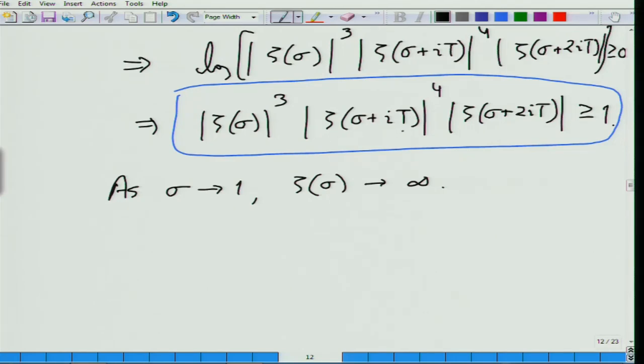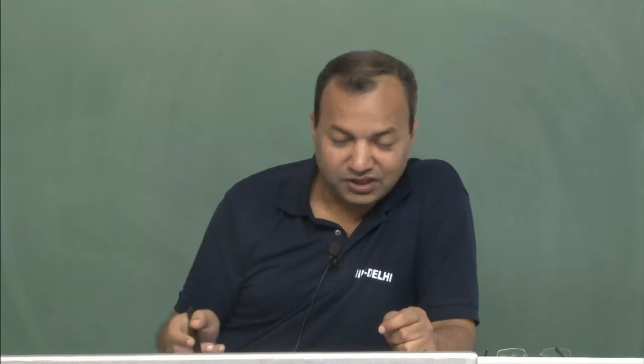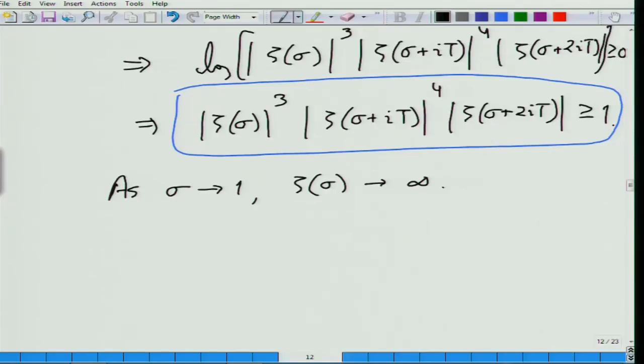Now comes the third character ζ(σ+2it). This may still want to send the product to infinity or keep it above 1, provided it also has a pole of order at least 1. But does it have a pole? No — the zeta function has only one pole, which is at σ = 1, nowhere else. So ζ(σ+2it) will be bounded. Together: a pole of order 3, a zero of order at least 4, and a bounded factor — the product will go towards 0.